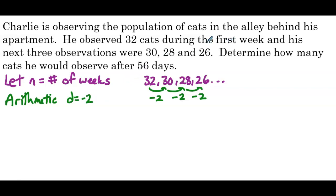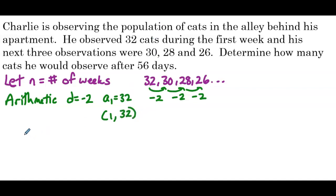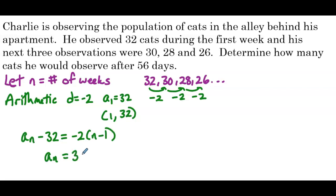His observation during the first week was 32, so a sub 1 equals 32 — n is the number of weeks, and 32 is the first week. For arithmetic, we express the first term as a point: (1, 32). So a sub n minus 32 equals negative 2 times n minus 1, giving us a sub n equals 32 minus 2 times n minus 1.